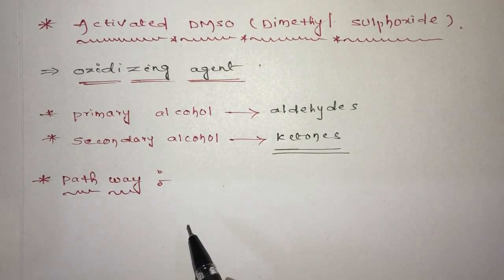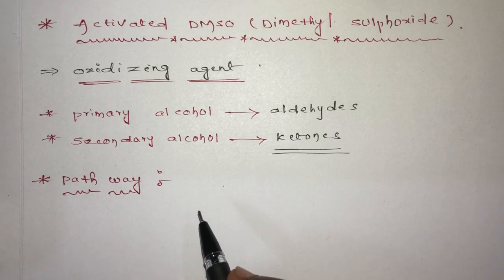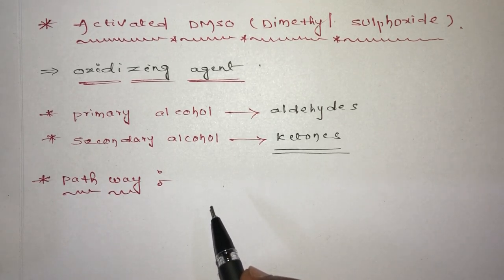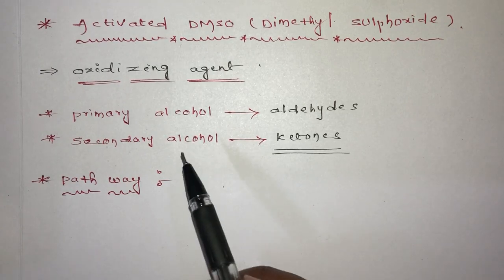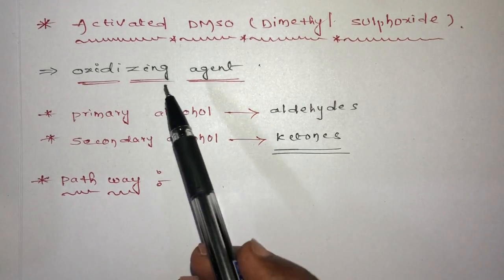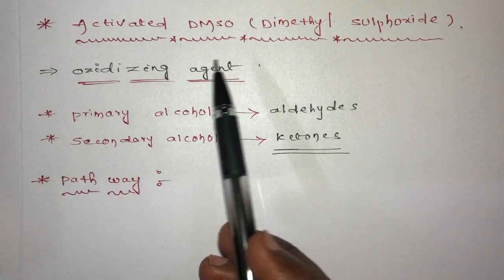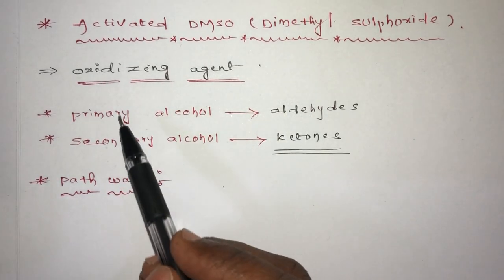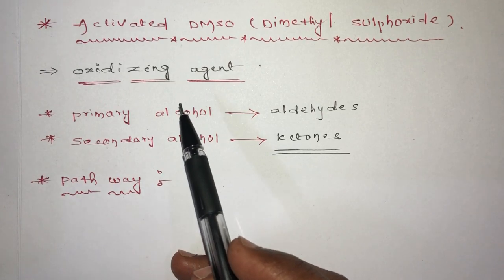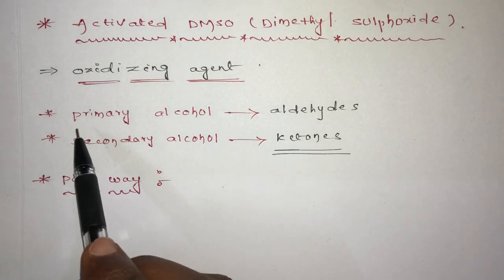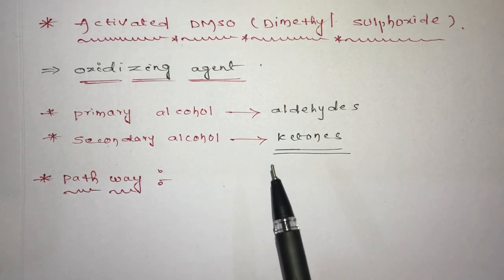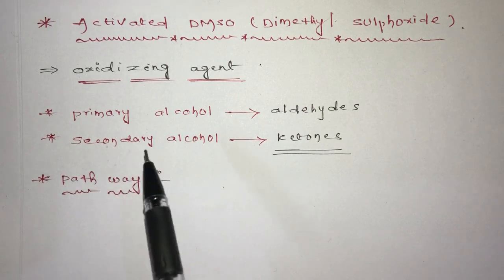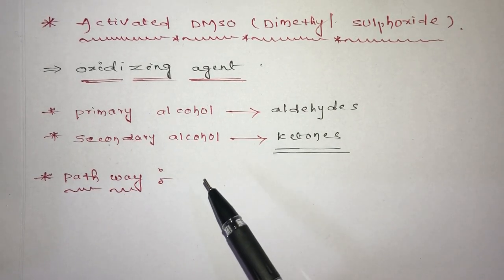Hello friends, welcome to my channel. In this video I am going to explain one of the oxidizing agents which is most frequently asked in competitive exams regarding DMSO-containing reagents. Here I am going to discuss about activated DMSO, which is dimethyl sulfoxide reagent, mostly used as an oxidizing agent. It converts primary alcohols to aldehydes and secondary alcohols to ketones.